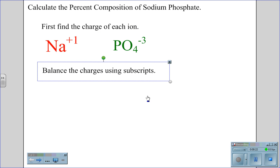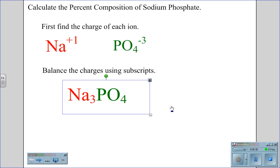Using subscripts, we can balance the charges, realizing that we need three sodium plus one ions to equal out the negative three phosphate ion. Therefore, our molecule is Na3PO4.